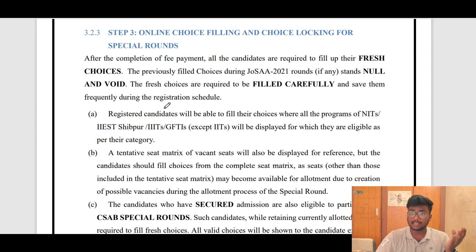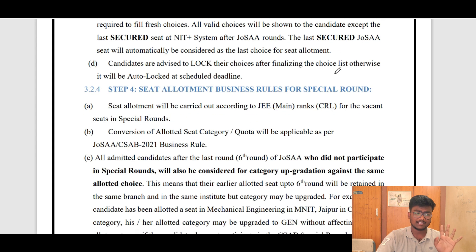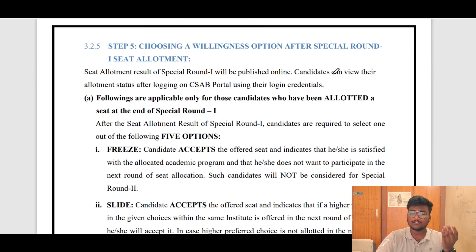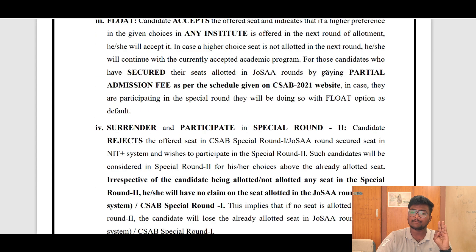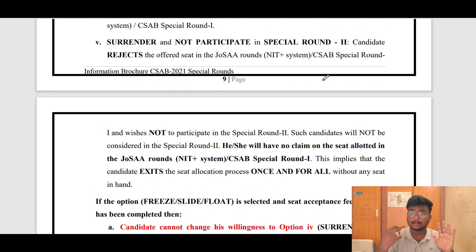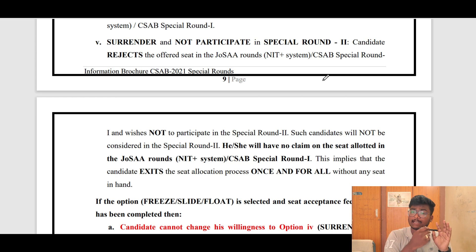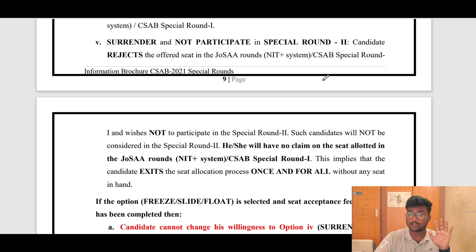After paying the fees, the next step is online choice filling and choice locking for special rounds. After that, step four is seat enrollment according to the schedule. Once a seat is allotted, you will have five options: Freeze, Slide, Float, Surrender and Participate in Special Round 2, and Surrender and Not Participate in Special Round 2. In JOSA you only had three options — Freeze, Float, and Slide. Here there are two additional options related to surrendering your seat.